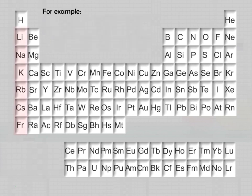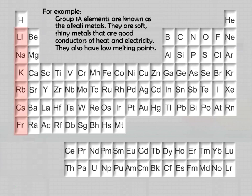For example, group 1A elements are known as the alkali metals. They are soft, shiny metals that are good conductors of heat and electricity. They also have low melting points.